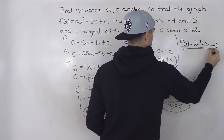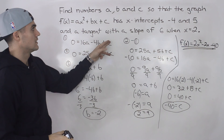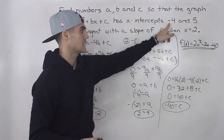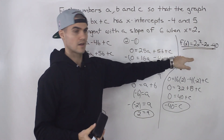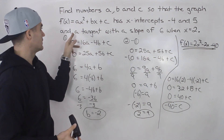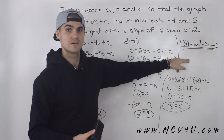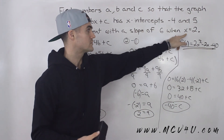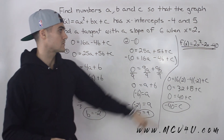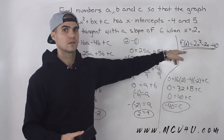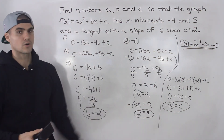You can always check your answer by taking that function and verifying all the characteristics are met. Plug in negative 4 and 5 for x to confirm they give 0. Then take the derivative and plug in x equals 2 to make sure you get 6. In both cases it works out, so we can be confident we have the correct function with the correct constants.